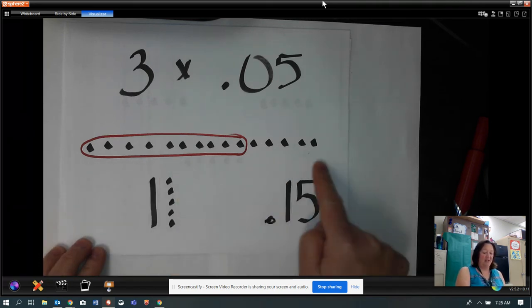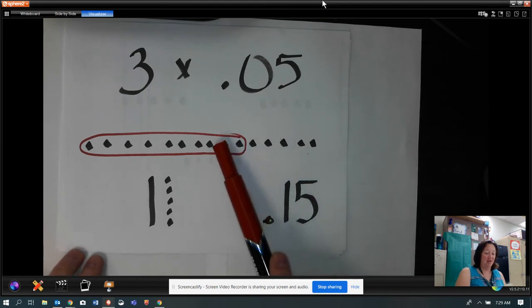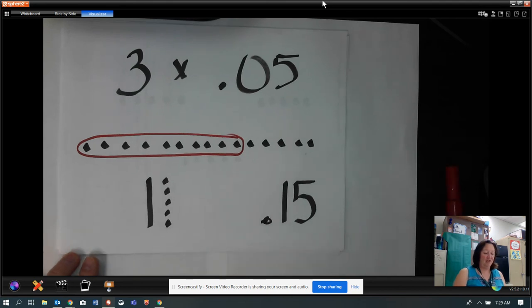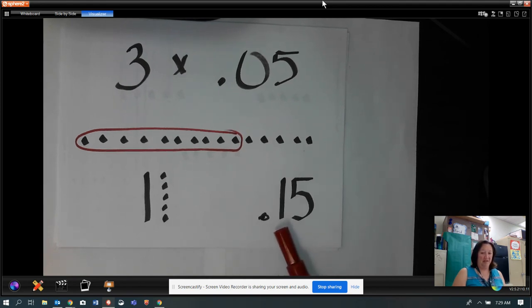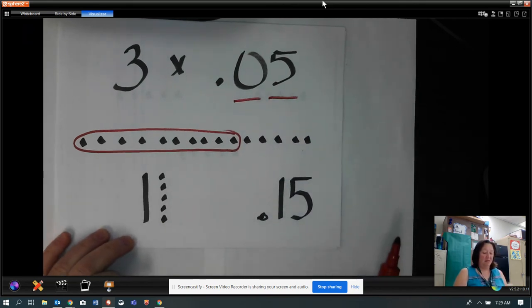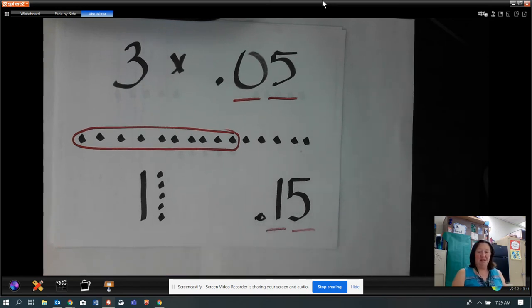And I know a group of ten hundredths, I can regroup and make one tenth. So here's my ten hundredths I circled. I changed it into a tenth. And then I have five hundredths left. So now I have fifteen hundredths. How many decimals in my problem? Two, two places behind the decimal point. How many in my answer? Two. That number has to be the same.